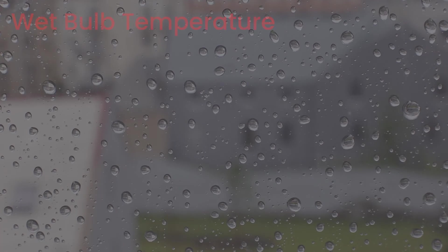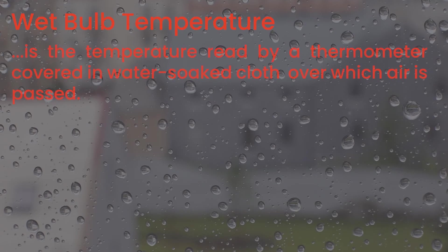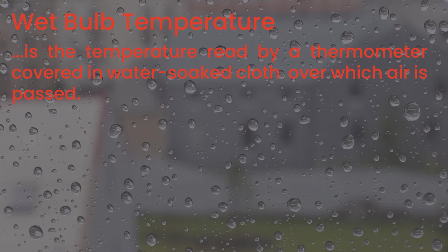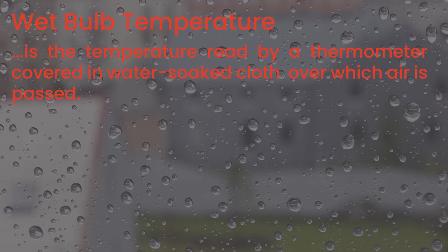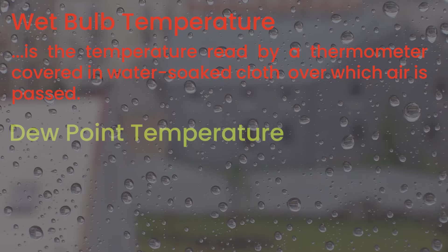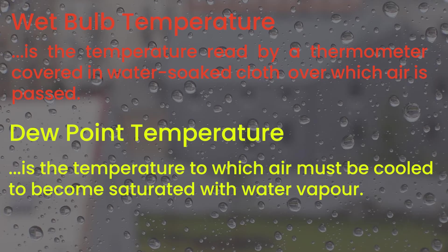The Wet Bulb Temperature is the temperature read by a thermometer covered in a water-soaked cloth over which air is passed. The Dewpoint Temperature is the temperature to which air must be cooled to become saturated with water vapour.